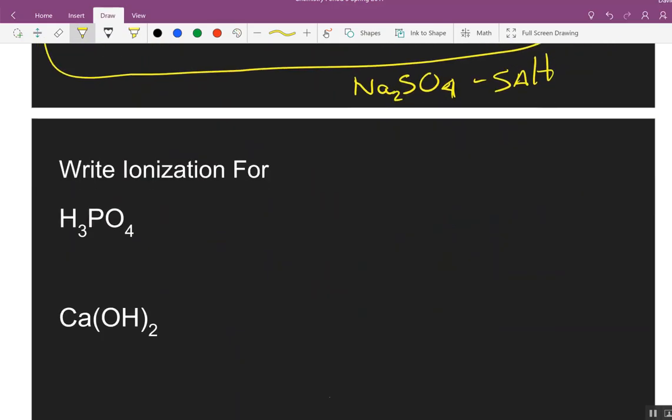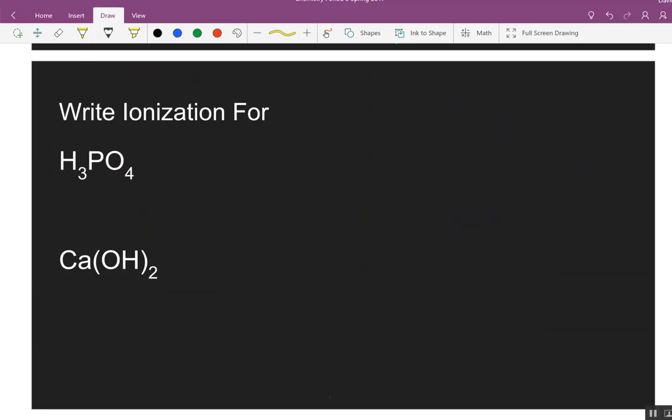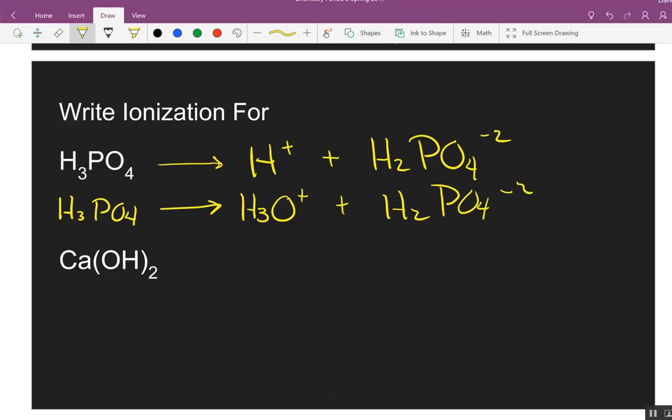Now, we need to write the ionization for this. Now, there's two ways to do this. The first way is it will do, like, this. All right? And if you put this, this is enough. The other way is H-3-O plus H-2-P-O-4-2. No, because, or minus one. Thank you. You are correct. Well, if you rip a hydrogen off, hydrogen's a positive, right? So that means you decrease this by one, so it's a minus one.